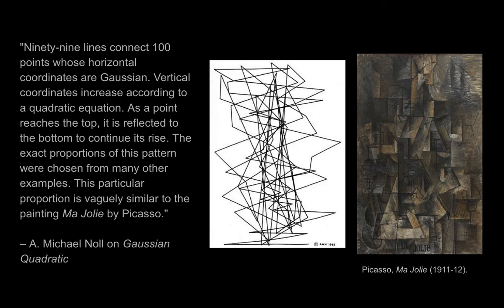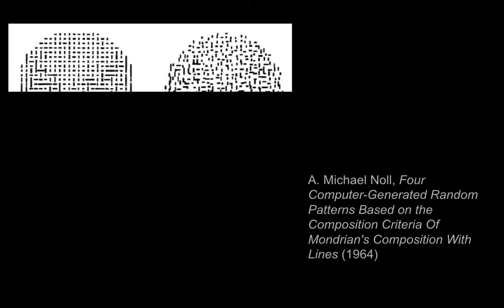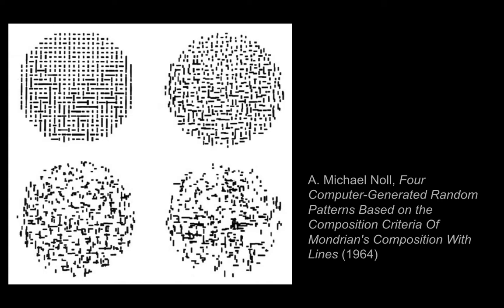Here's Knoll describing his work: '99 lines connect 100 points whose horizontal coordinates are Gaussian. Vertical coordinates increase according to a quadratic equation. As a point reaches the top, it is reflected to the bottom to continue its rise. The exact proportions of this pattern were chosen from many other examples. This particular proportion is vaguely similar to the painting Majoli by Picasso.' This is another example by Knoll, inspired by Mondrian: four computer-generated random patterns based on the composition criteria of Mondrian's Composition with Lines from 1964.